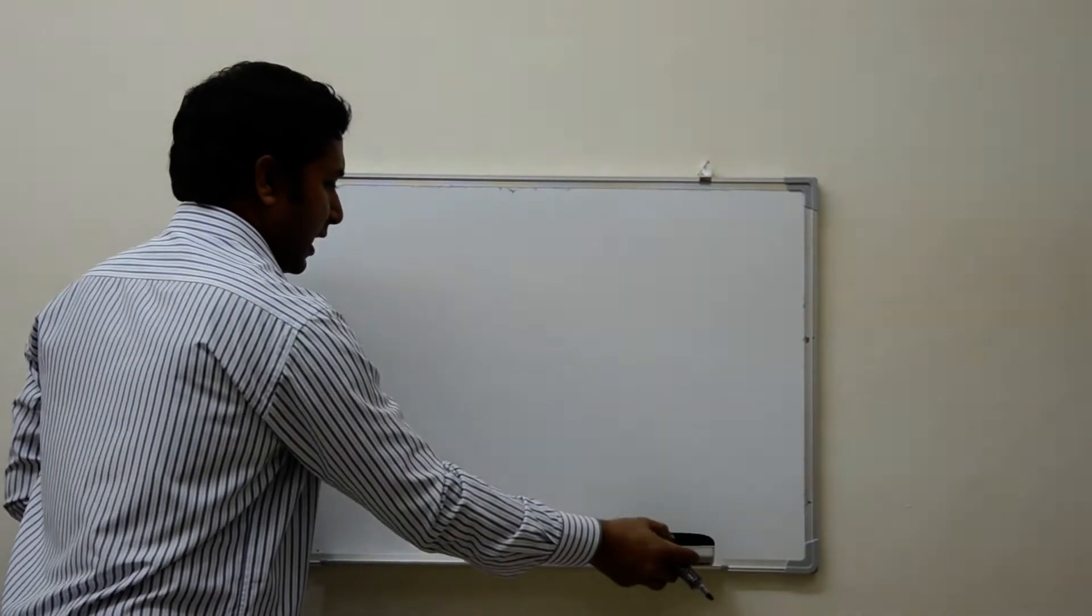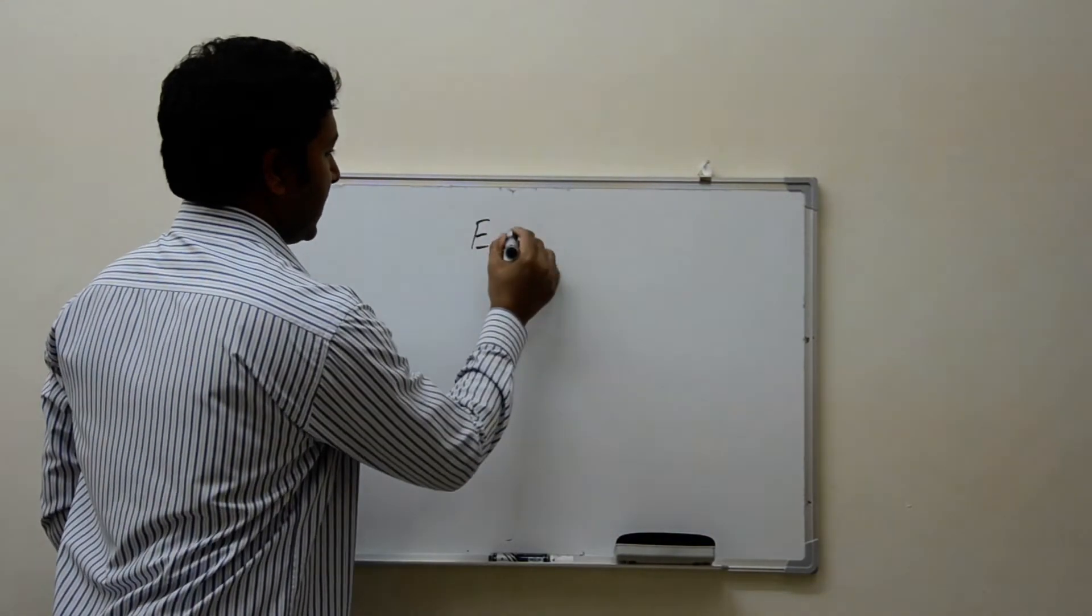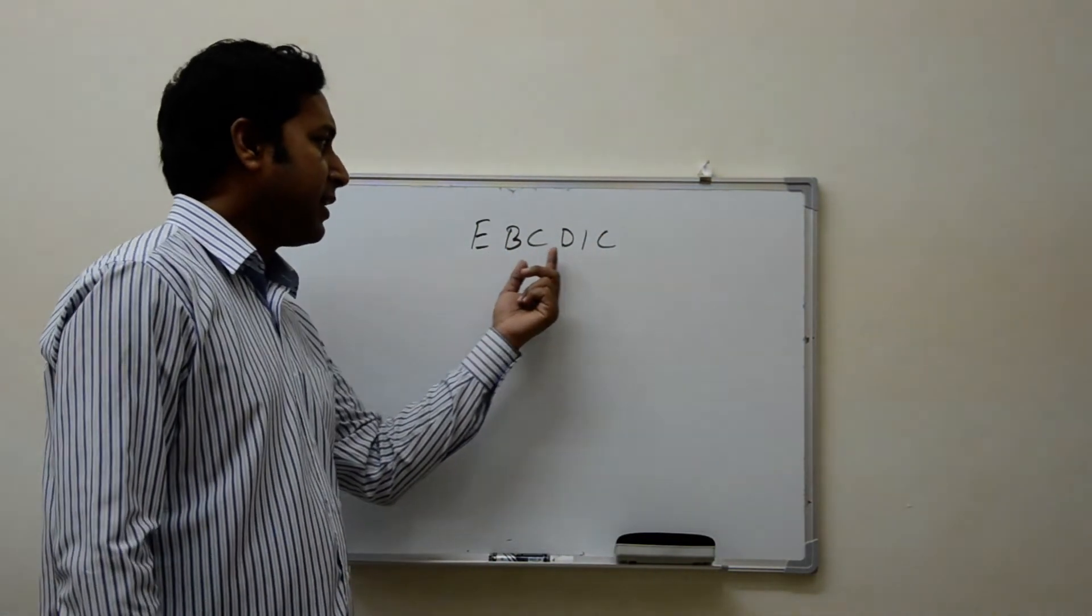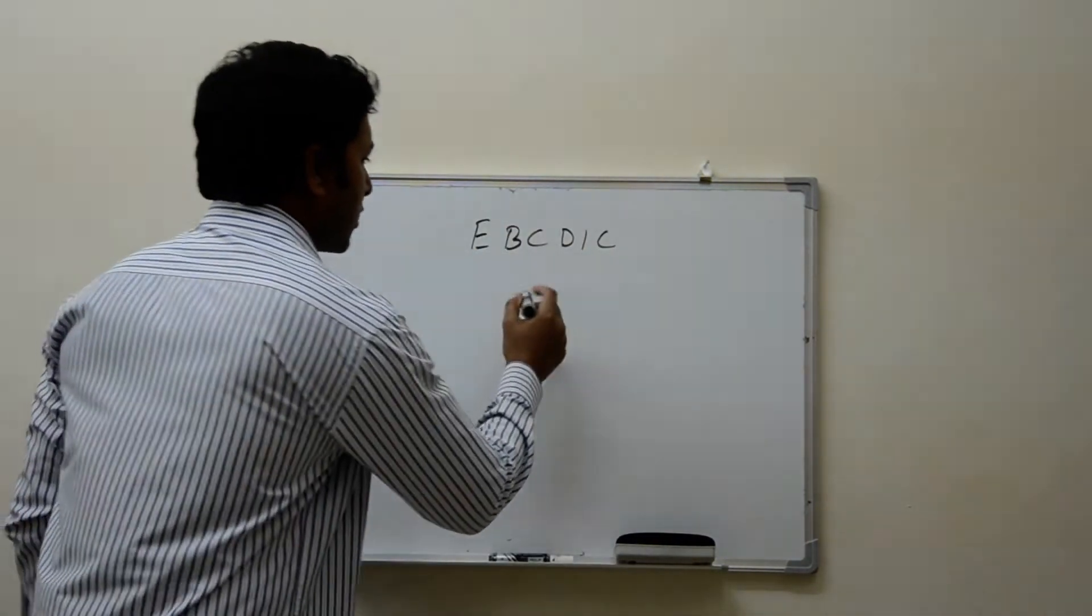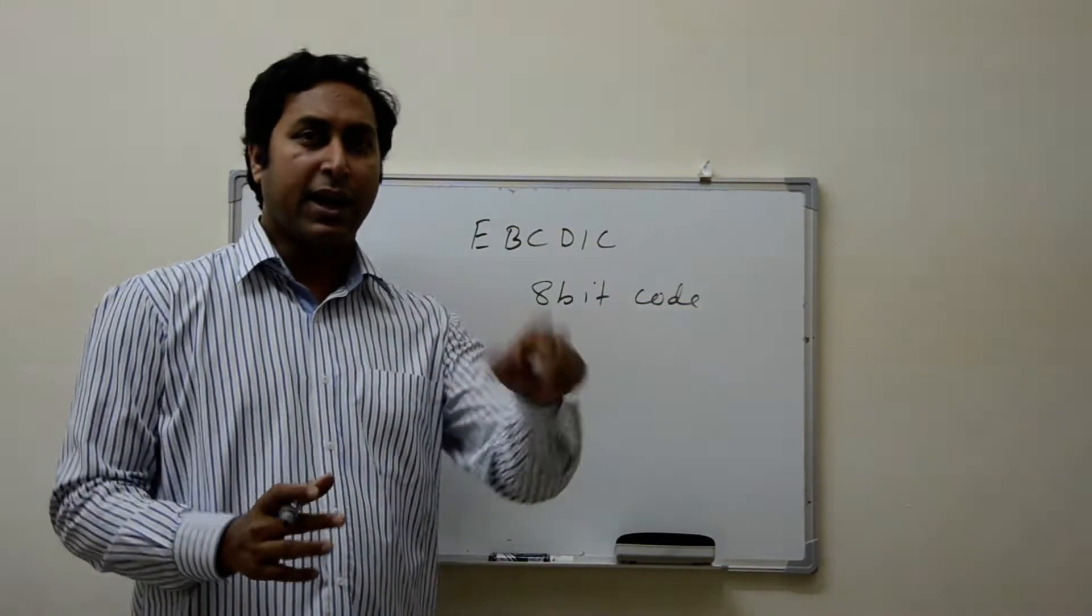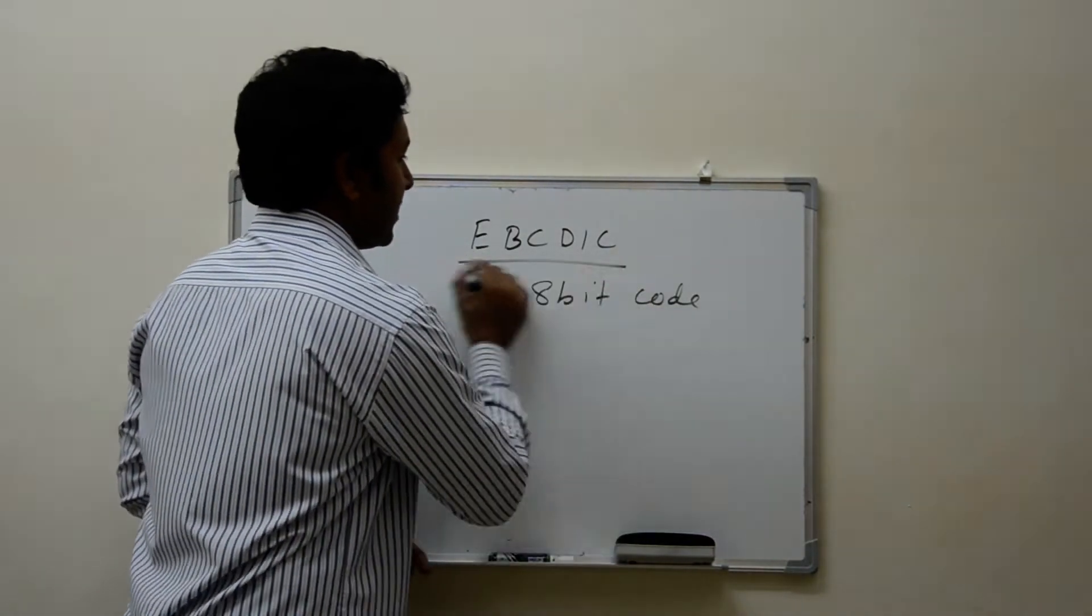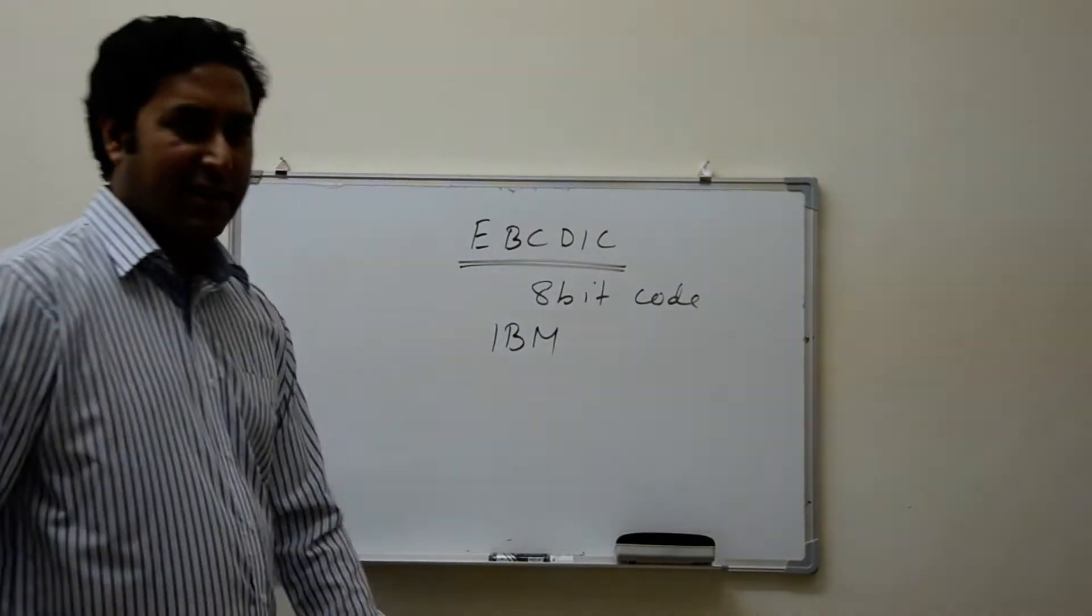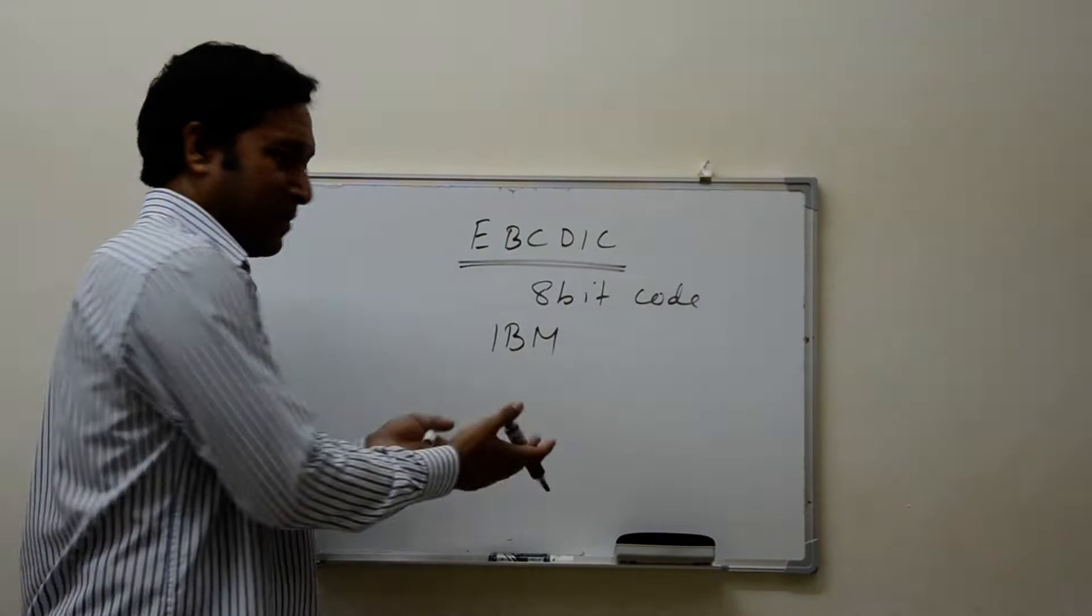You may have heard about another code, which one is EBCDIC. Extended Binary Coded Decimal Interchange Code. This is also an 8-bit code. Now what is the difference between this one and extended ASCII? Actually, EBCDIC was designed for IBM machine, and very hardly this one is used. So hope you have understood this one.